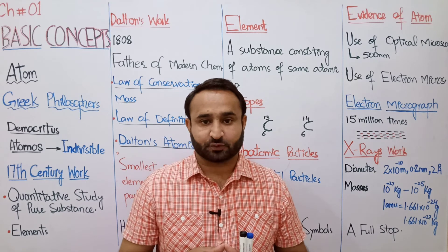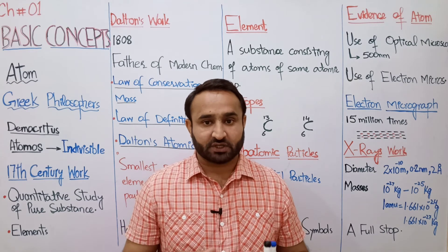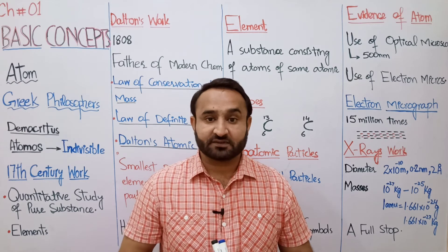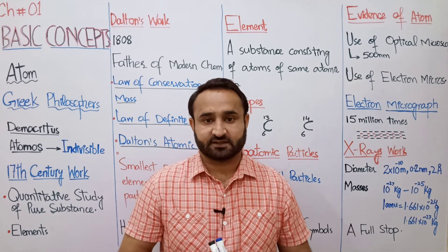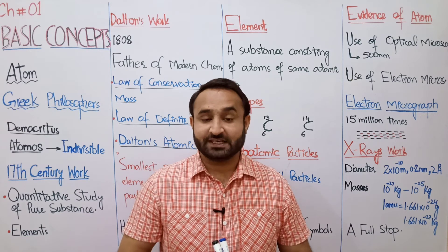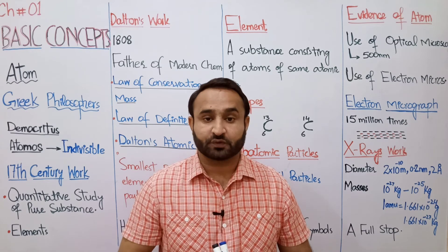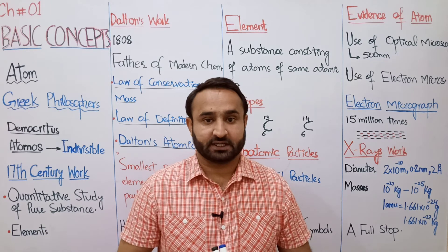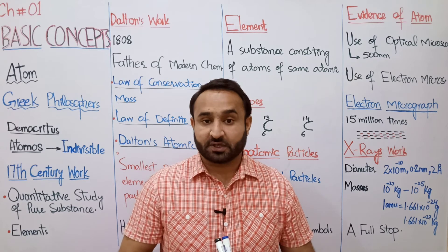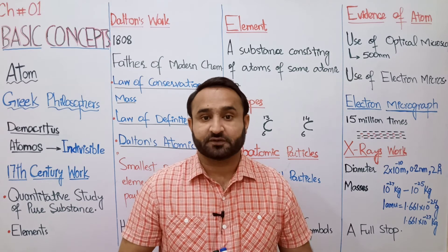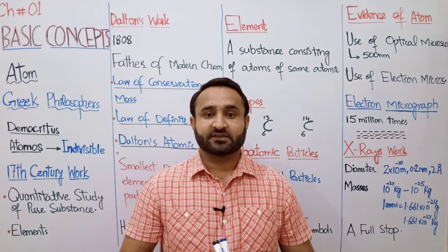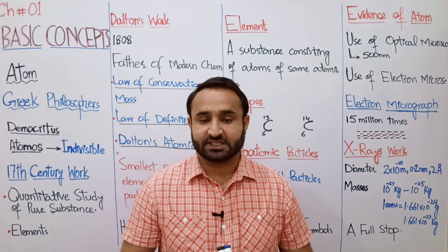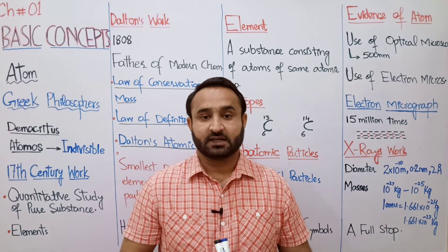Greek philosophers کے مطابق، اگر matter یا کسی substance کو smaller and smaller particles میں break کیا جائے، تو ایک stage آتی ہے جہاں ایک ایسا smallest particle حاصل ہو جاتا ہے جسے مزید break، divide، یا subdivide نہیں کیا جا سکتا۔ اس indivisible ناقابلِ تقسیم ذرے کو atom کہتے ہیں۔ یہ لفظ Greek word 'atomos' سے derive ہوا ہے جس کا مطلب ہے indivisible۔ Greek philosophers کی definition تھی: atom is the smallest particle of an element which cannot be subdivided.